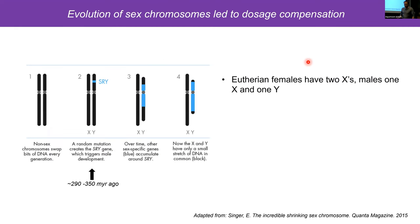In regard to sex chromosomes, one of the most fundamental differences between males and females is sex chromosome content. Females have two X chromosomes and males have an X and a Y. These sex chromosomes arose about 290 to 350 million years ago from proto-sex chromosomes, following the emergence of the male-determining factor SRY on what would become the Y.